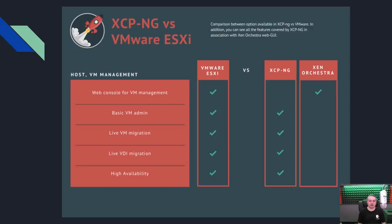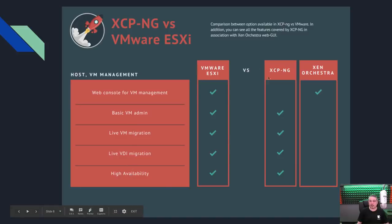XCP-ng has slides on their website comparing it to VMware. VMware is the big enterprise player, and XCP-ng has feature parity in most areas: web console management, basic VM, live VM migration, live VDI migration, and high availability. The web console in XCP-ng is handled by Xen Orchestra — a VM you run within XCP-ng that provides the web interface to manage all systems. Console view is also available via Xen Center tools.